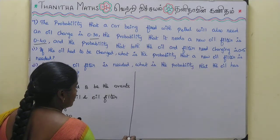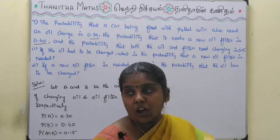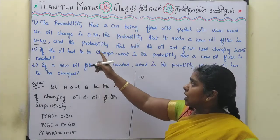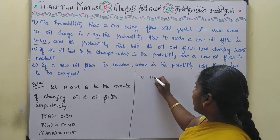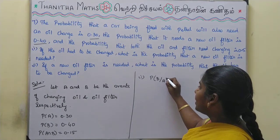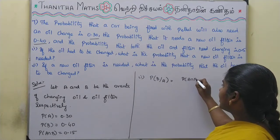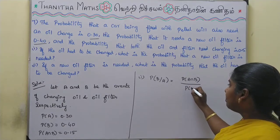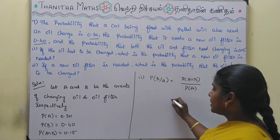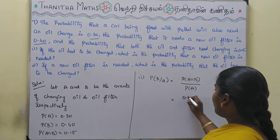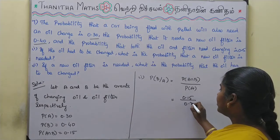The first question is P(B|A) — if the oil change is needed, what is the probability that a new oil filter is needed? Using the formula P(B|A) = P(A ∩ B) / P(A) = 0.15 / 0.30, so P(B|A) = 1/2.